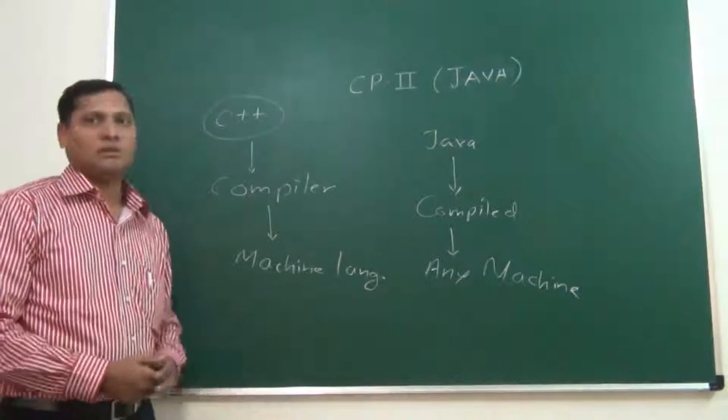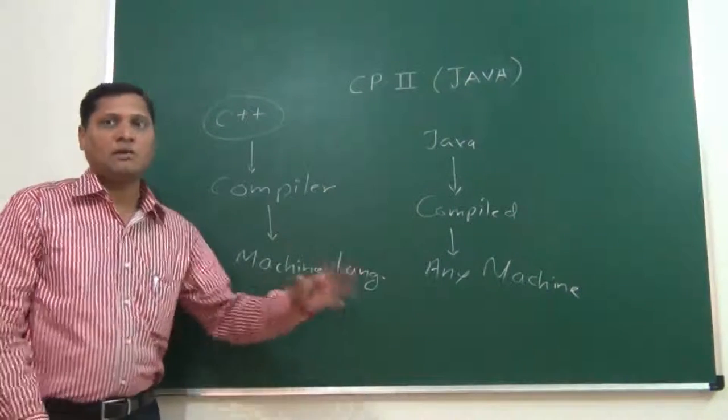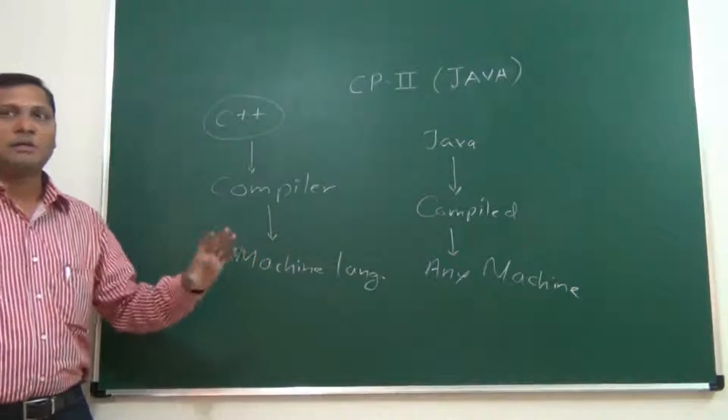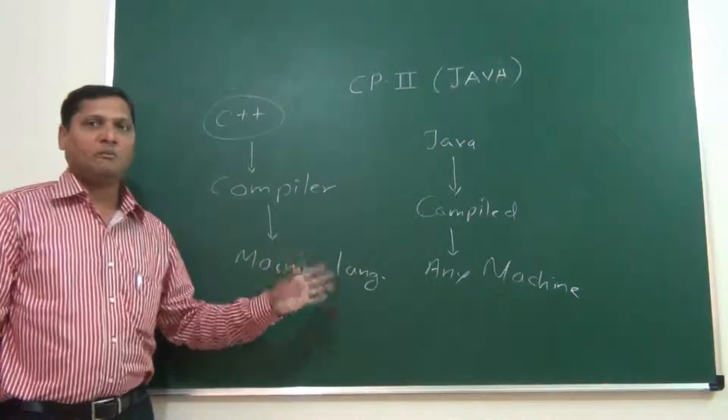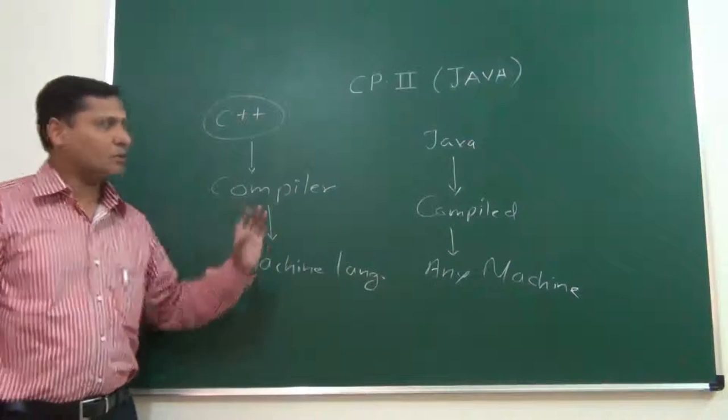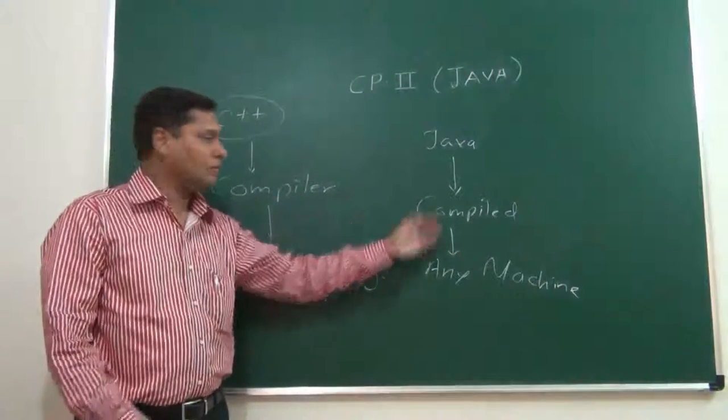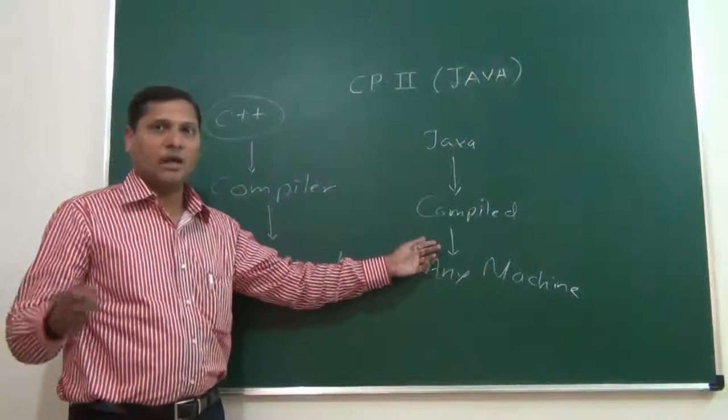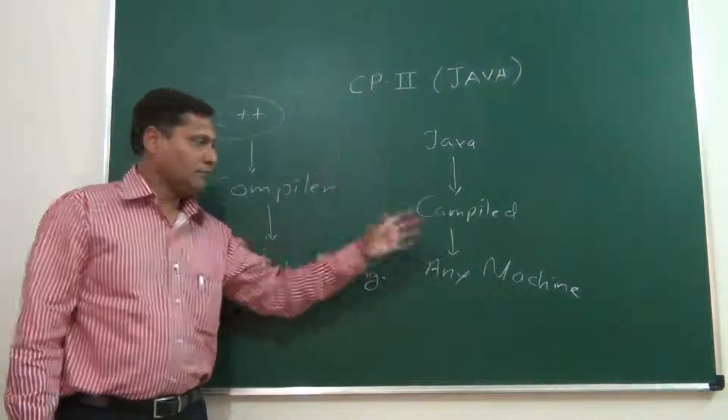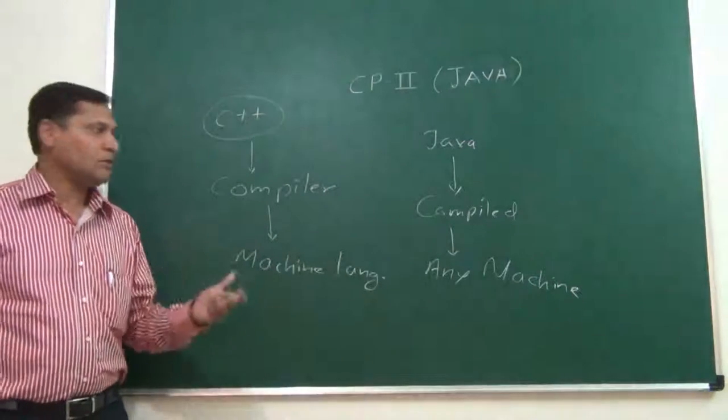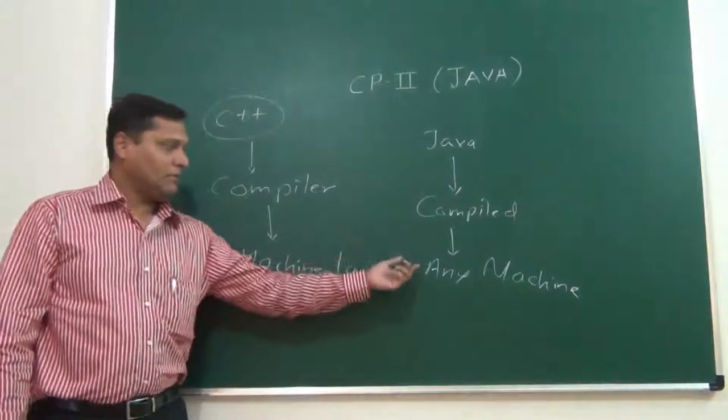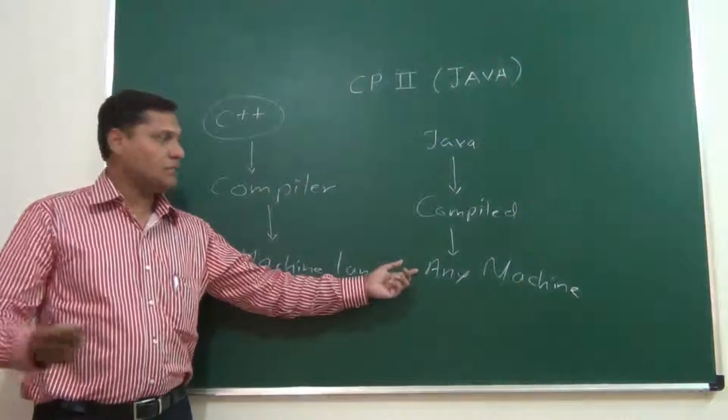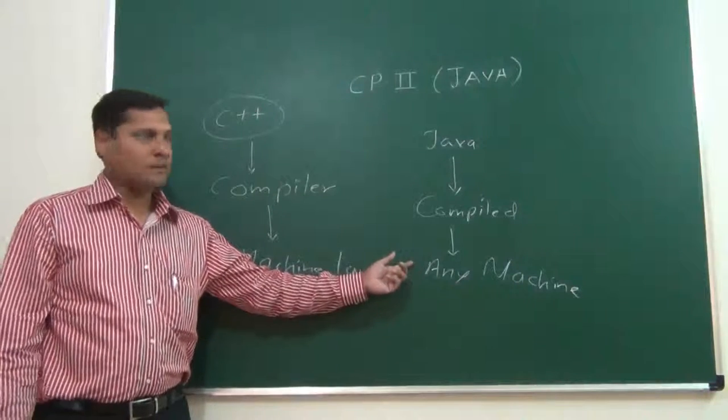And that is why Java becomes a platform independent language. Now, how will they have made it possible? That we have to understand. It is the main feature of Java, that is platform independence. Java is completely platform independent language because a program written in Java can be compiled and run on any machine. As the Sun Microsystems, the main company that developed that language, they claim that it can run on any machine.